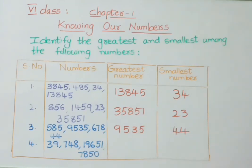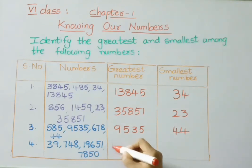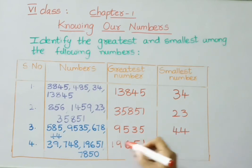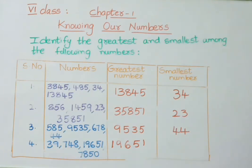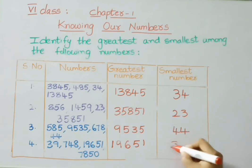See the last example: 39, 748, 9,651, and 7,850. Among all these, a 5-digit number would be greatest, but here we check — 9,651 is the greatest number. Now see the remaining numbers: 39 is a 2-digit number, 748 is a 3-digit number, 7,850 is a 4-digit number. Among these, the 2-digit number is smallest, therefore the smallest number is 39.